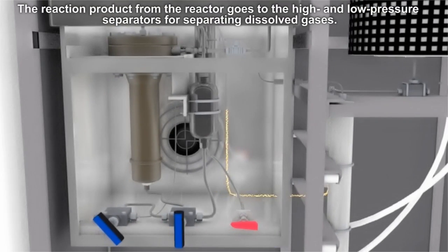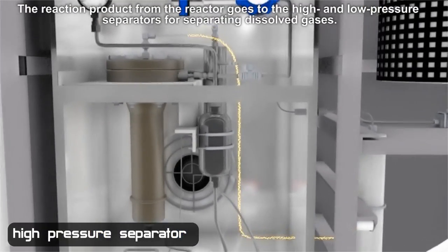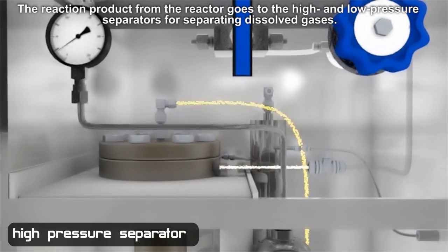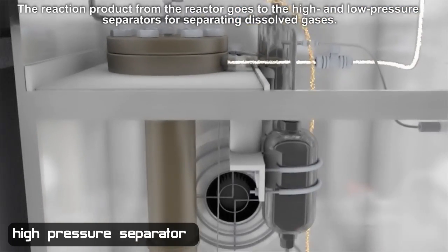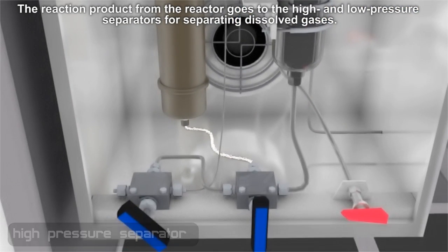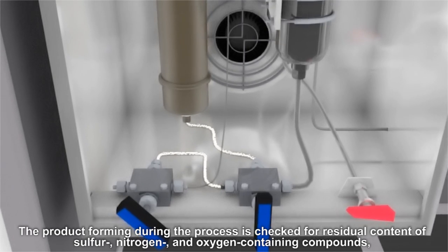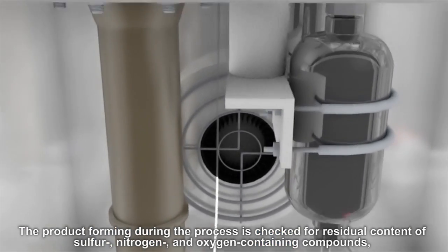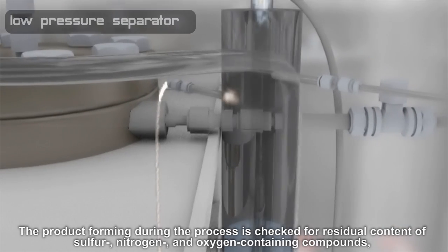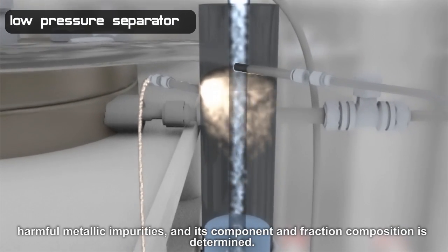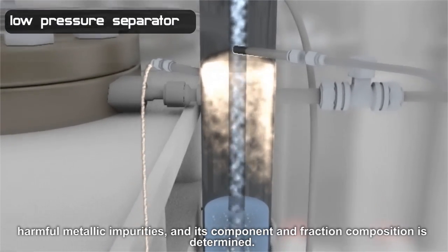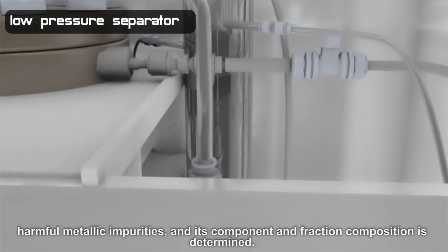The reaction product from the reactor goes to the high and low pressure separators for separating dissolved gases. The product forming during the process is checked for residual content of sulfur, nitrogen and oxygen-containing compounds, harmful metallic impurities, and its component and fraction composition is determined.